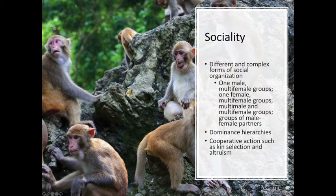We also see altruism — even among unrelated members of the same group, a member who has a certain amount of food will share it, even if it is inadequate for themselves, with other members of the group who are not kin. Altruistic behavior — these are some of the traits we associate with primates, and that we also associate with being human.